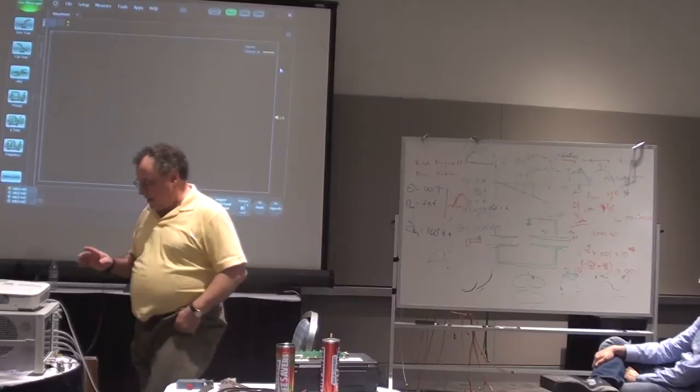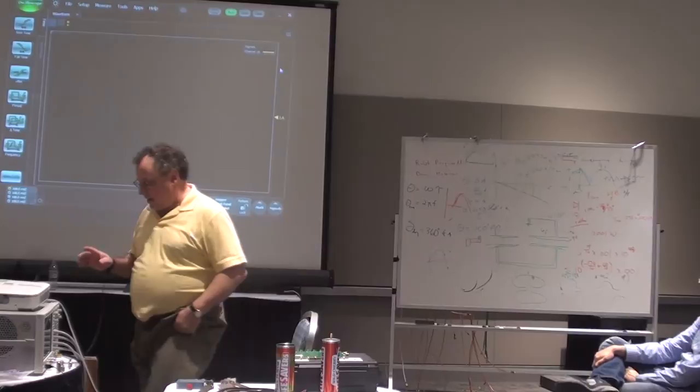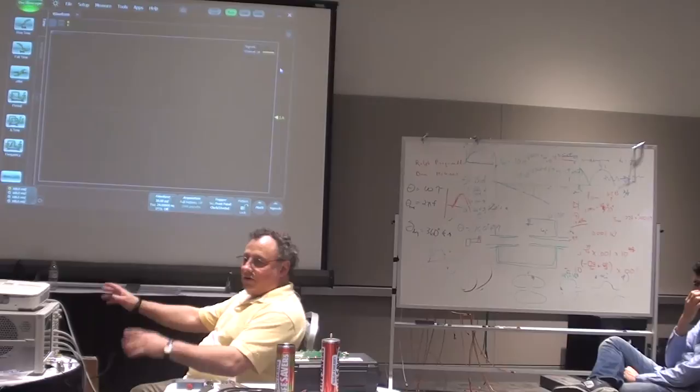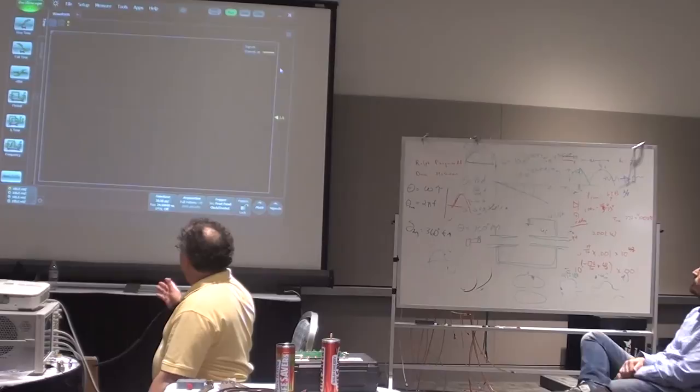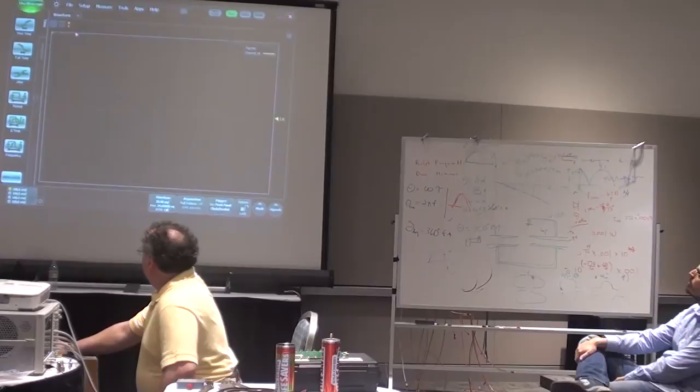So when you first turn the thing on, and you need the mouse here to monkey around a bit, and it's got a lot of other creature features in terms of save this, that, and the other. You guys can figure that out on your own. When you first turn it on though, it thinks it's an oscilloscope. Okay, and that's perfectly fine, and we don't want it in oscilloscope mode.